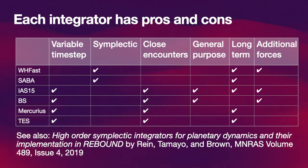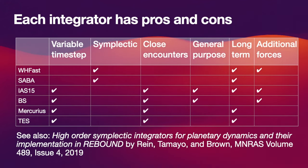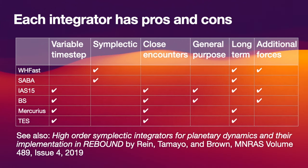In this video I cannot go into detail for all possible options. In particular, WHFAST comes with many internal options where you can choose symplectic correctors or other kernel modules. If you're interested in that, please look at the paper 'High-order symplectic integrators for planetary dynamics and their implementation in Rebound' by Rein, Tamayo, and Brown 2019, which describes these high-order symplectic methods in great detail.